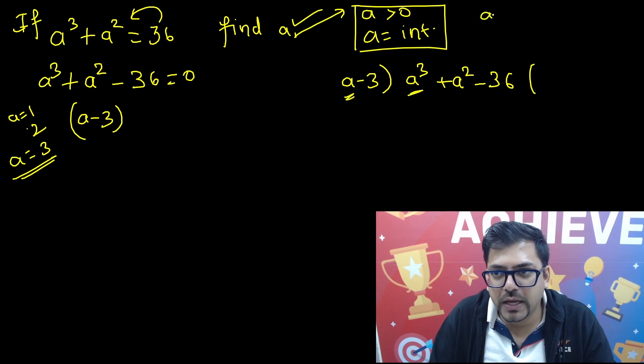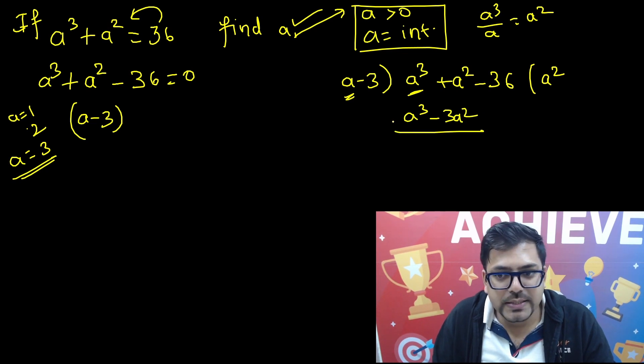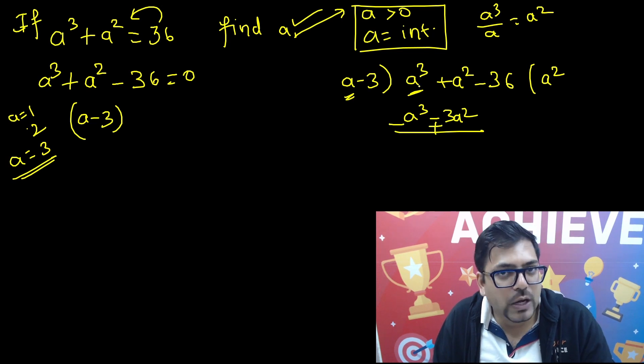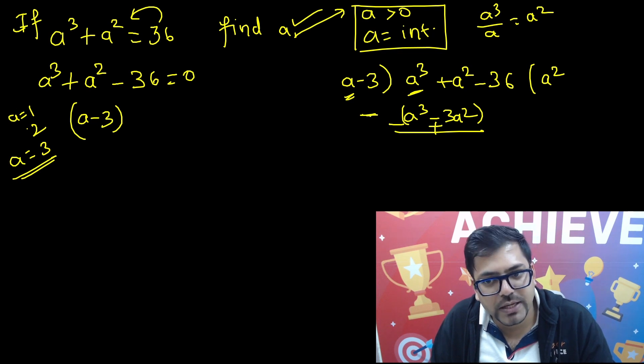You know the method, the basic drill. You'll take the first term, a³ divided by a you will get a². So you have got a². a² into a is a³, then minus 3a². Then a² again, so changing the signs, this plus will change to minus, minus will change to plus.